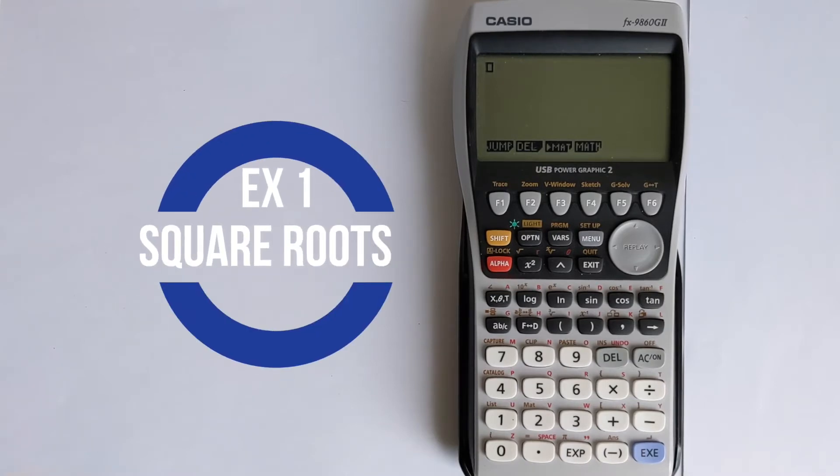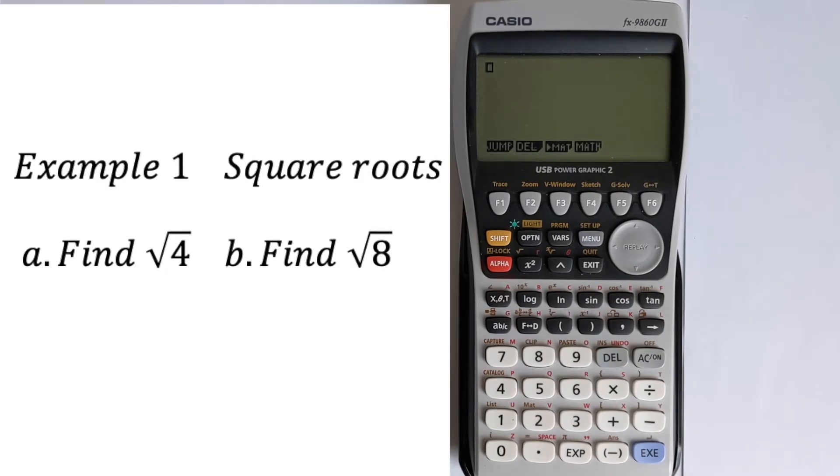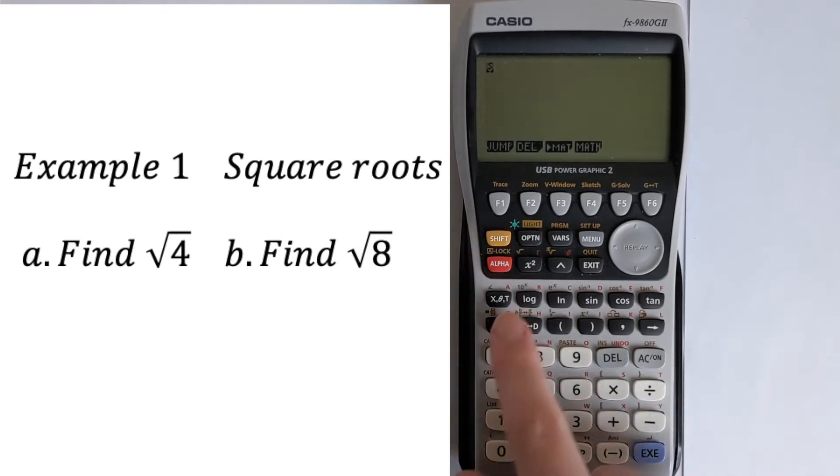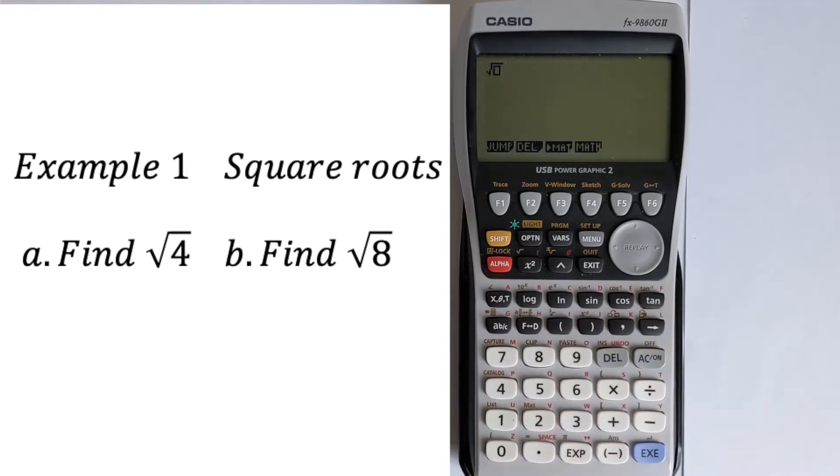So let's start with a simple example of finding some square roots. We're going to find root 4 and then root 8. The square root button is located here on the x squared. However, because it's in the orange text, you have to press shift and then you can press that button and it will access the square root.